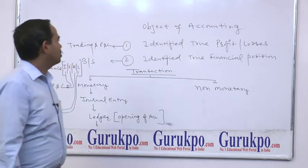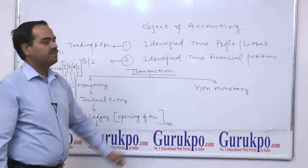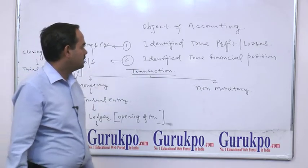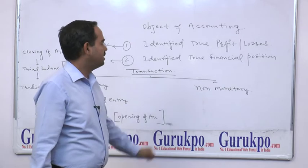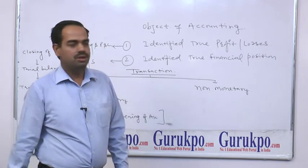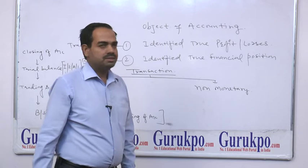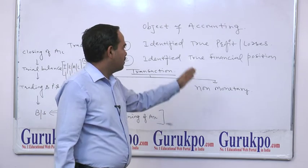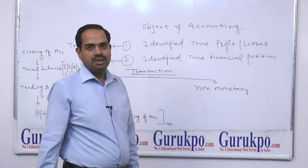The main objects of accounting are: first object is to identify true profit or losses, and the second object of accounting is to identify true financial position. For achieving the first object, a trader makes a trading and P&L account, and for achieving the second object, the trader makes a balance sheet.